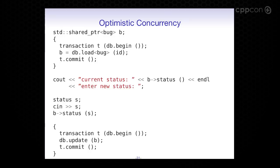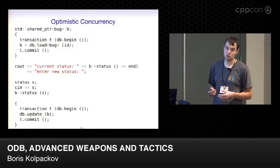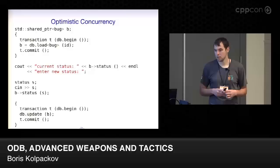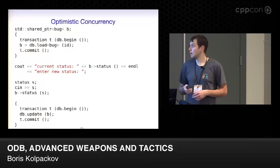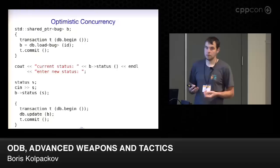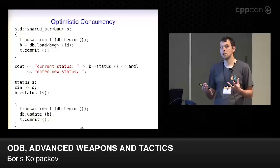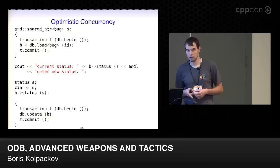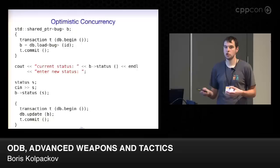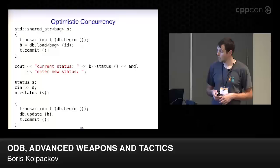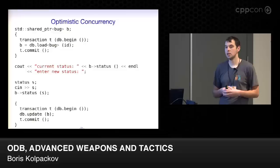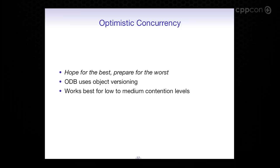The natural fix is to split into two transactions, doing the user input outside. The first transaction loads the bug, we show the user the status and ask for a new one, then start another transaction to update. But while we fixed what was wrong with the previous approach, we also broke what was good — now someone can change the bug report while the user is thinking, and we can override someone else's changes based on outdated information. This is a fairly common problem: long-lived application transactions involving user input. The solution is actually fairly simple and elegant — it's called optimistic concurrency.